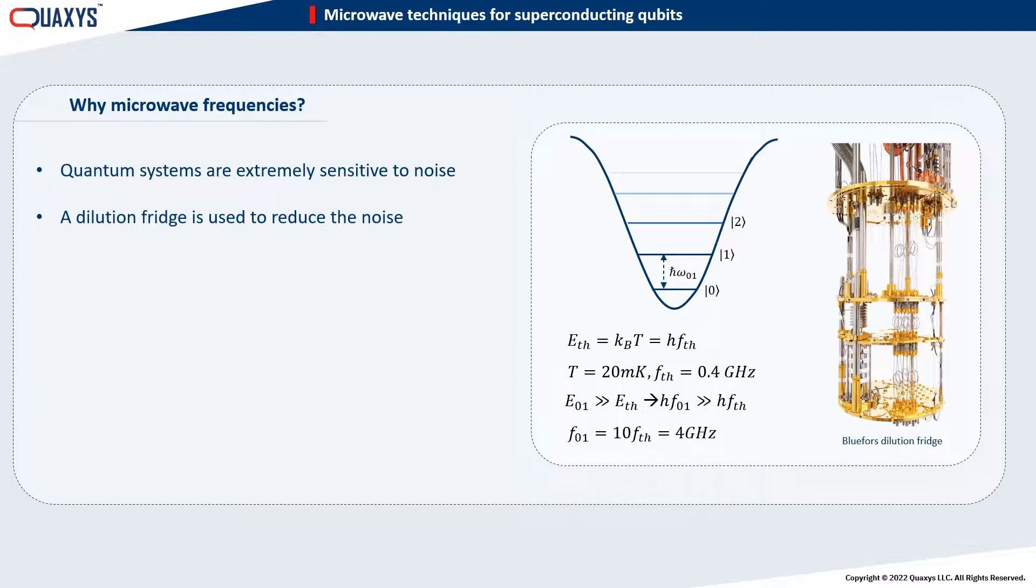When we look at different qubits, most of them work in the range of 4 to 8 GHz.